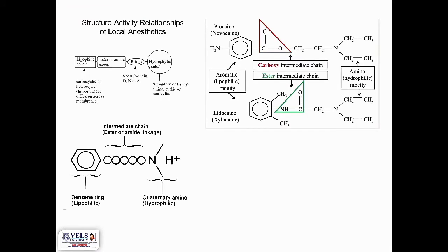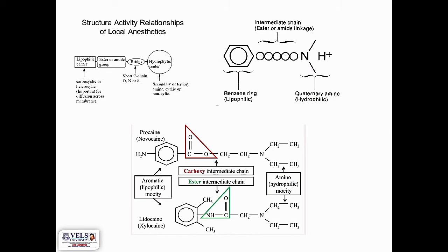Moving on to the structure-activity relationships of local anesthetics, the structure of local anesthetics has four components: the lipophilic component, that is the lipophilic center; an ester or amide group; a bridge, which is a short carbon chain containing oxygen, nitrogen, and sulfur; and a hydrophilic center. If you take the structure of procaine, you can see an aromatic ring, which is the lipophilic moiety, a carboxy intermediate chain, and an amino moiety, which is the hydrophilic moiety.